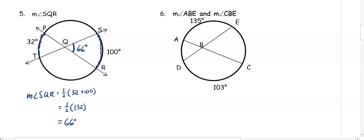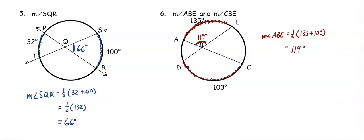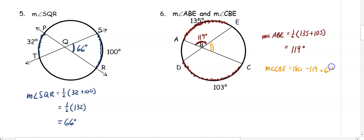In number six, we want to find the angle measures of angle ABE and angle CBE. Angle ABE intercepts arcs of 135 degrees and 103 degrees, so the angle equals one-half of 135 plus 103, giving us 119 degrees. Since angles ABE and CBE form a straight line, the measure of angle CBE is 180 minus 119, which is 61 degrees.